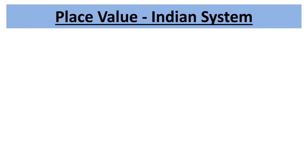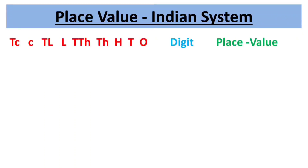We use the Indian place value chart to read and write numbers as per the Indian number system. Every digit in a number has its own value depending on its position in the place value chart. The nine places are grouped into four periods: ones, thousands, lakhs, and crores. All periods are separated by a comma while writing the number in its numeral form.